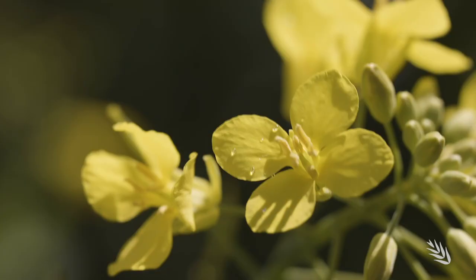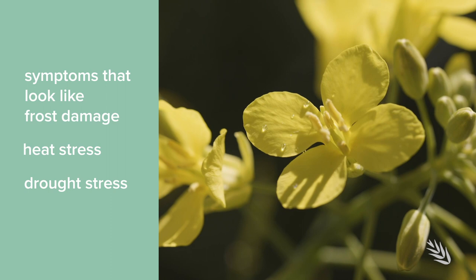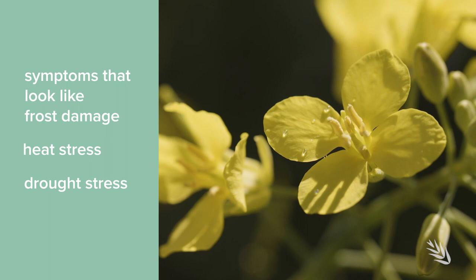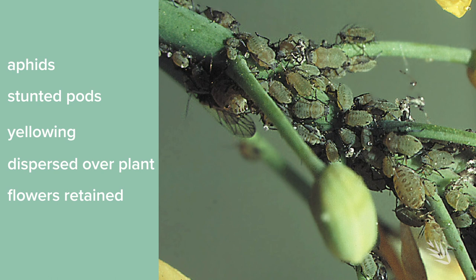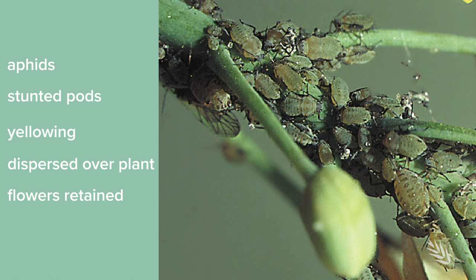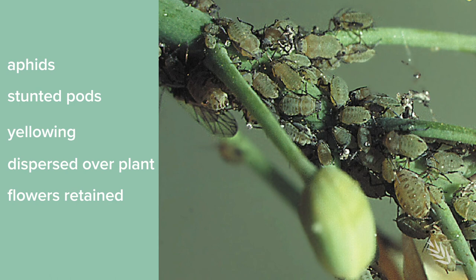When looking for frost symptoms, be mindful that similar symptoms can be caused by heat stress and drought stress. The best way to differentiate is to check the weather conditions in your area. Some biotic factors such as aphids can also affect pod appearance — causing stunted pods and yellowing — but you will see aphids on other parts of the plant as well.